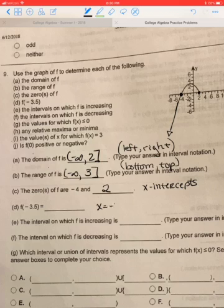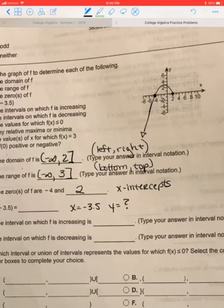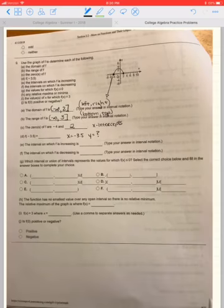F of negative 3.5 is saying x equals negative 3.5. What is y? Well, when x is negative 3.5, did it give me a function? No.